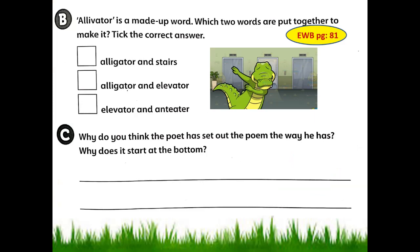Now let us do B. Elevator is a made-up word — which two words are put together to make it? The first option is alligator and stairs — no, that is not correct. The second option is alligator and elevator — yes, that is correct. Alligator and elevator together make Elevator. The third option is elevator and anteater — no, that is not right. Put a tick on the second option: alligator and elevator.